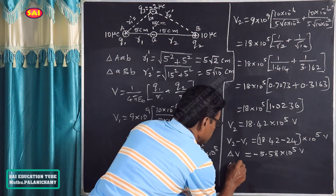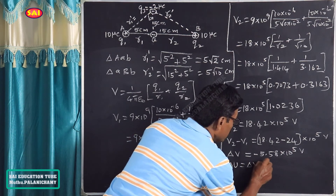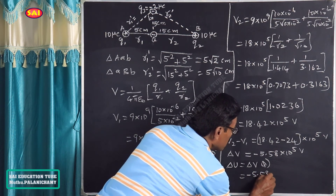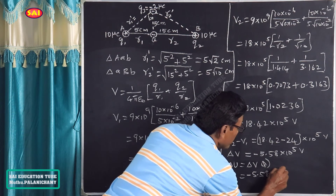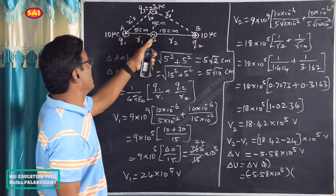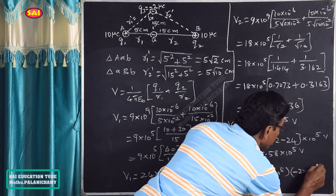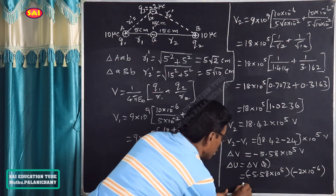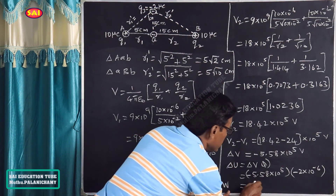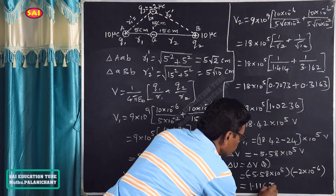The change in energy is ΔU = ΔV × Q. The potential difference ΔV = V2 - V1 = 18.42×10⁵ - 24×10⁵ = -5.58×10⁵ volts. Multiplying by the charge Q3 = -2×10⁻⁶ C, the change in potential energy ΔU = (-5.58×10⁵) × (-2×10⁻⁶) = 1.116 joules.